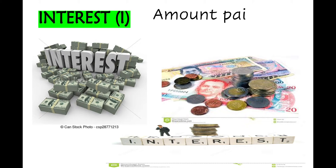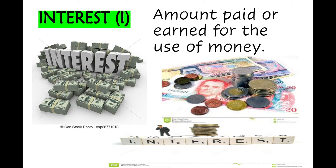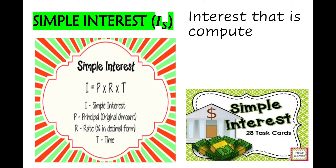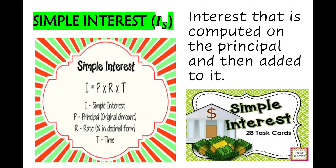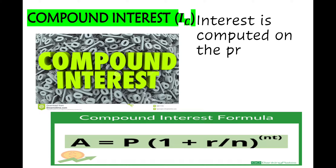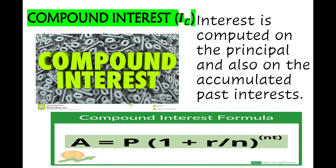Interest is the amount paid or earned for the use of money. Simple Interest is an interest that is computed on the principal and then added to it. Compound Interest is an interest computed on the principal and also on the accumulated past interest.